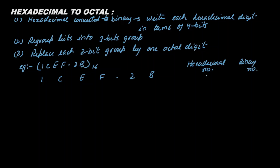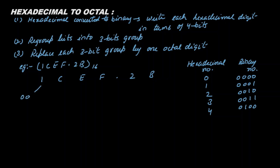A table will make it convenient for you to convert. For reference: 2 is 0010, 3 is 0011, and so on. For this example: 1 is 0001 in 4 bits, C is 1100, E is 1110, F is 1111, 2 is 0010, and B is 1011.